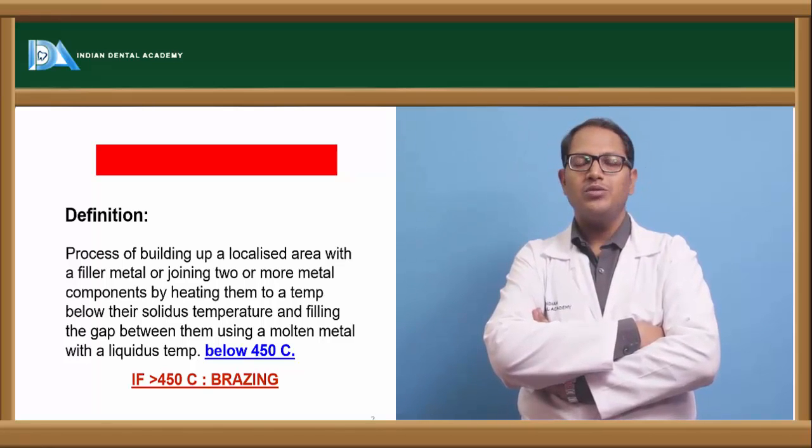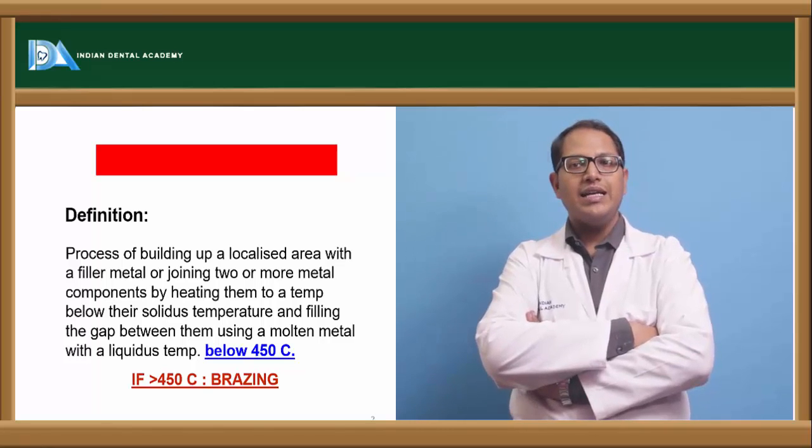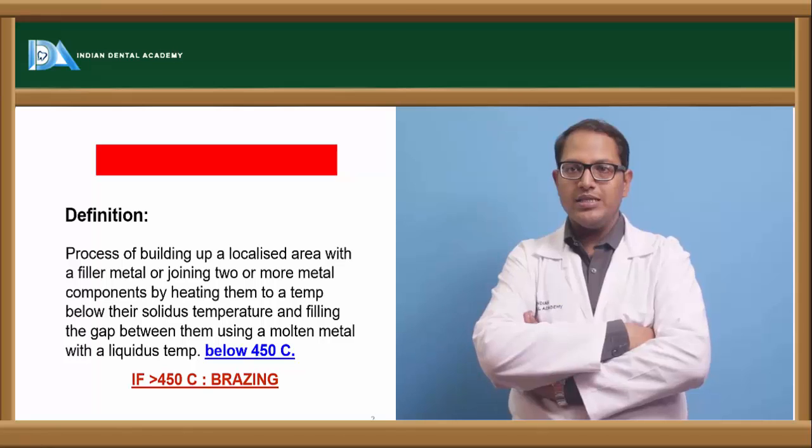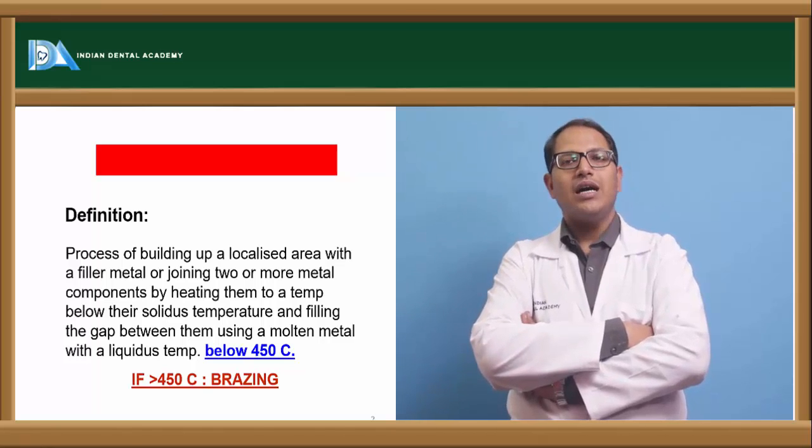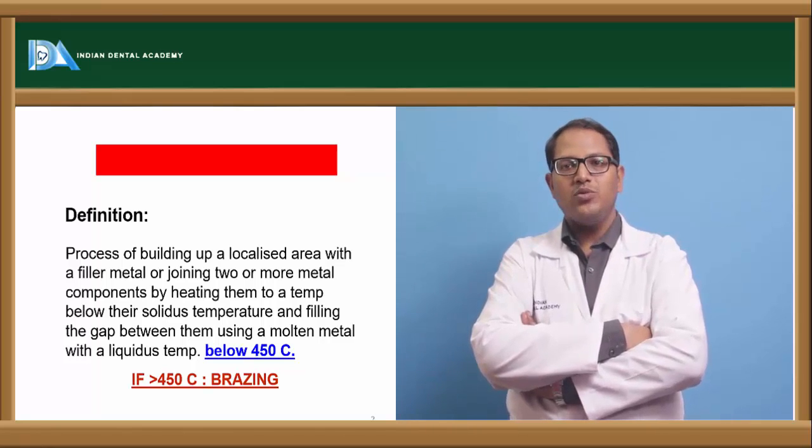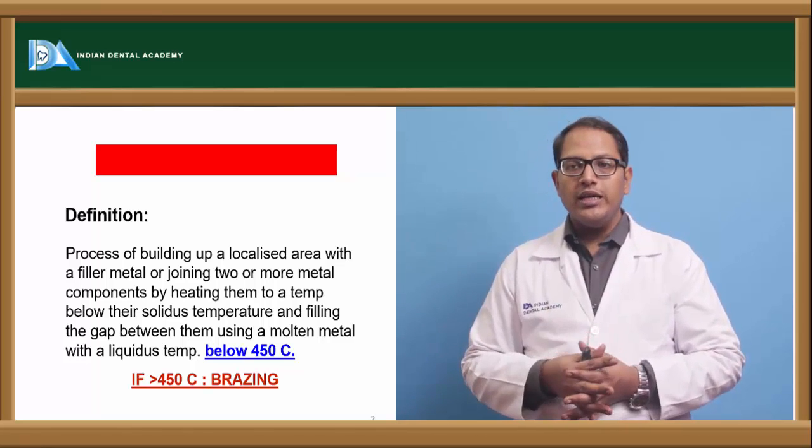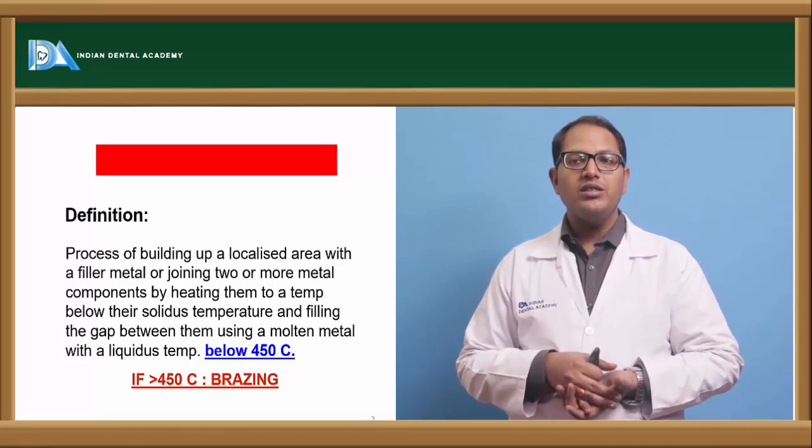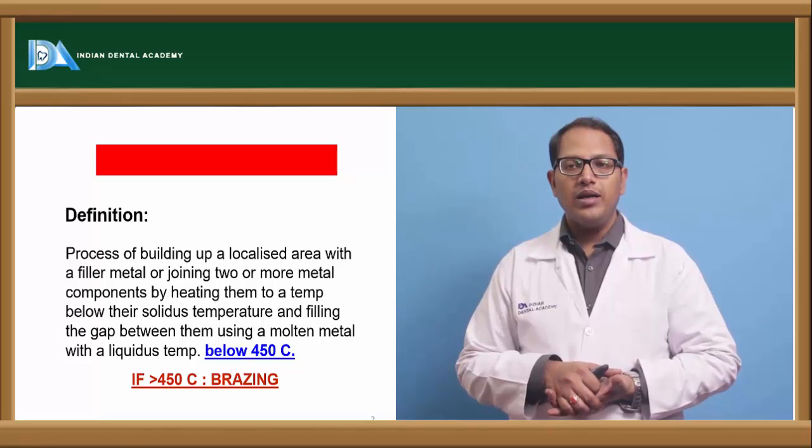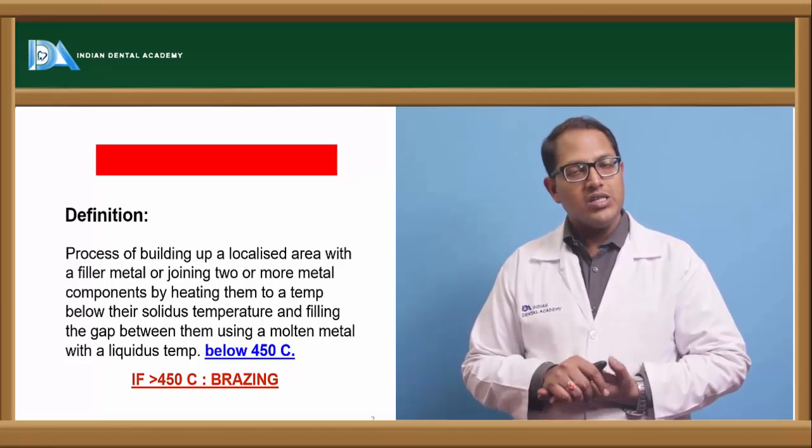Now what is solidus temperature? What is liquidus temperature? Solidus temperature is that at which a metal or alloy system becomes completely solid on cooling or starts to melt on heating. Whereas liquidus temperature is at which a metal or alloy system begins to solidify on cooling or becomes totally liquid on heating. Above liquidus temperature the metals are entirely liquid and below the solidus temperature the metal materials are entirely solid.